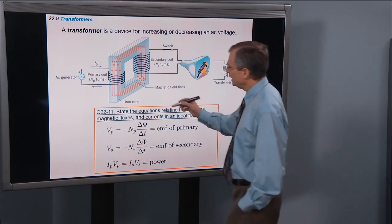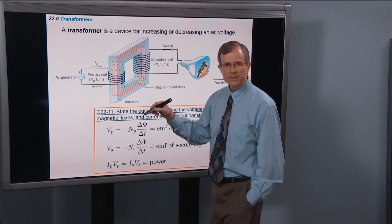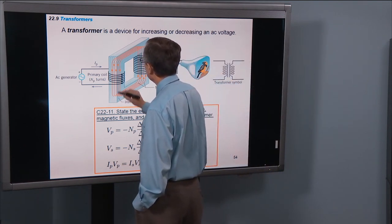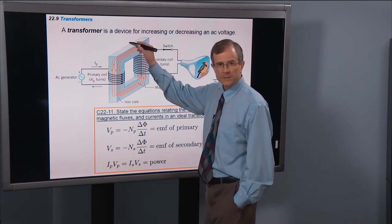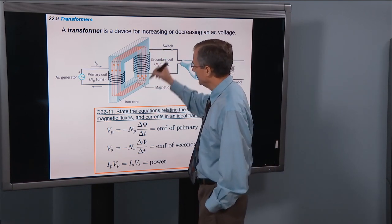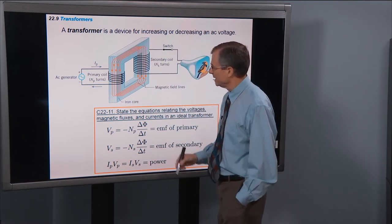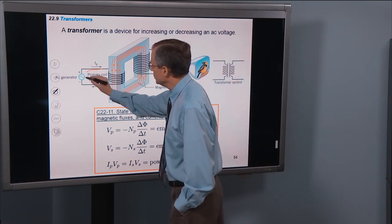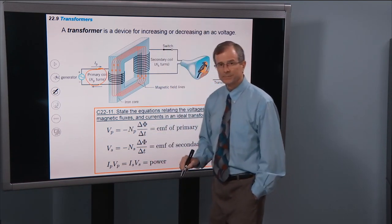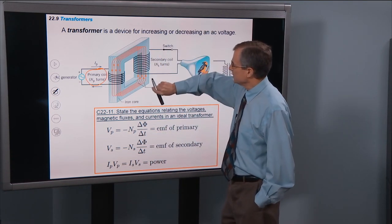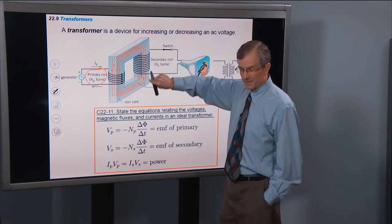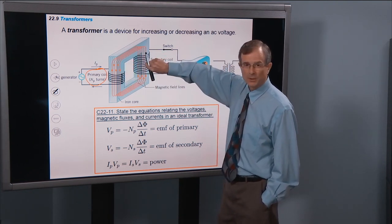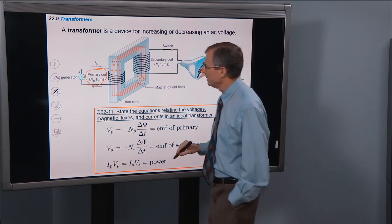So shown here is the standard configuration for a transformer, which has an iron core. It's this square-shaped blue, square-shaped piece. And its job in life is to channel the magnetic fields produced by this primary coil around. And so that same amount of magnetic flux that's produced here goes through the secondary coil.